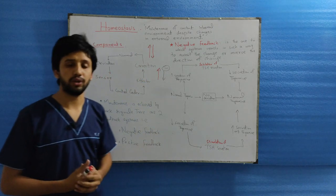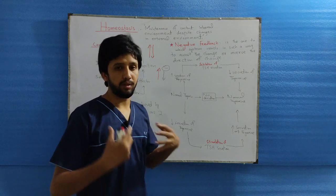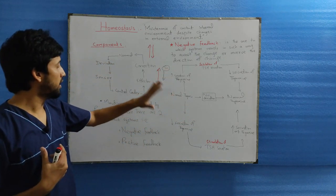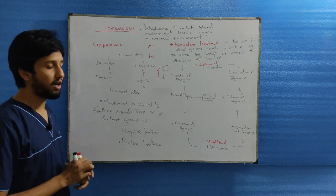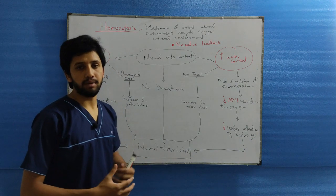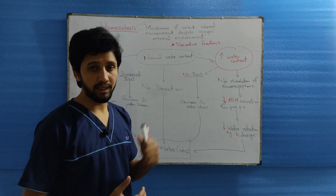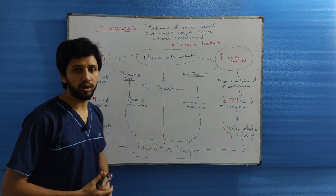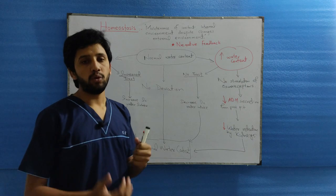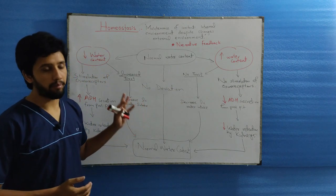We will now take another example of the negative feedback mechanism: the ADH system maintaining the water content level in our body. Normally, input and output are equal — that is, 2300 ml per day equals 2300 ml per day — when there is no deviation in the water level.